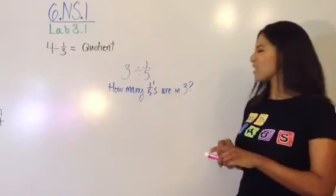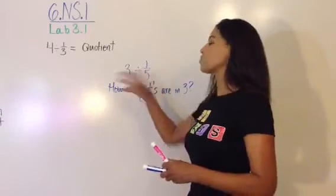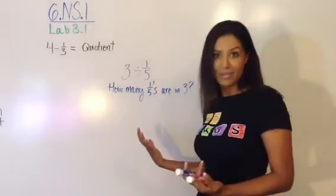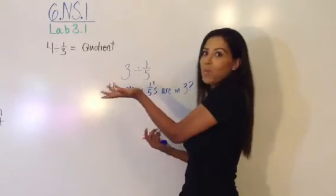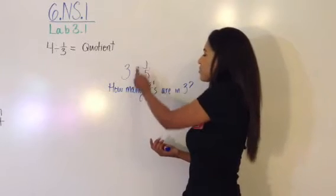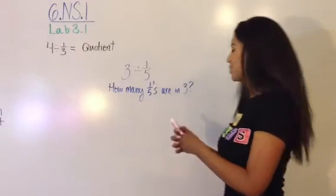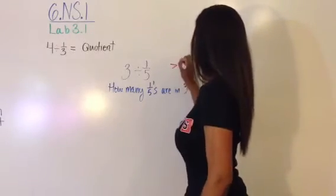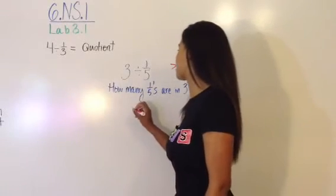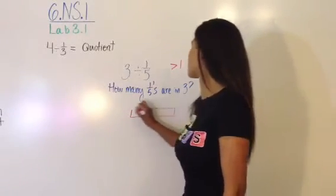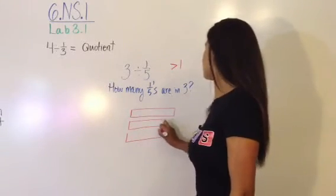And I want you to say, is this less than one or greater than one? Let's make an estimation. One-fifth is small, so it's going to go into three a lot of times. If this were three divided by three, it would be one. But one-fifth is much smaller than three, so it goes into three multiple times. We're going to say greater than one. And now, we're going to draw our visual model of three divided by one-fifth. We need three wholes. Let's draw three wholes together.